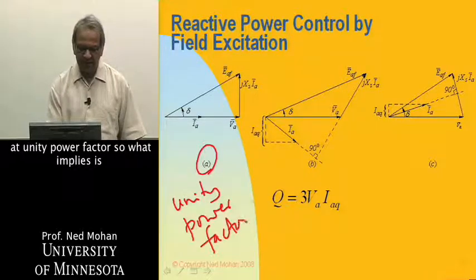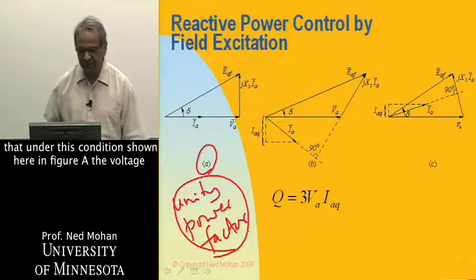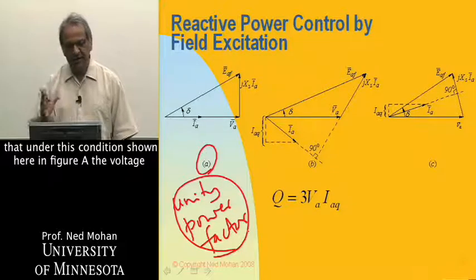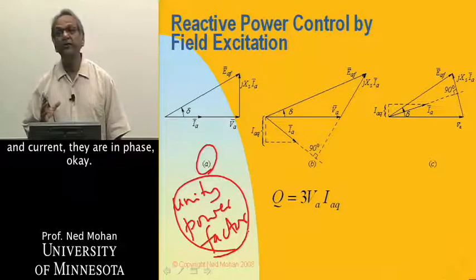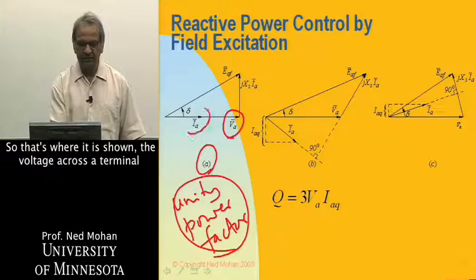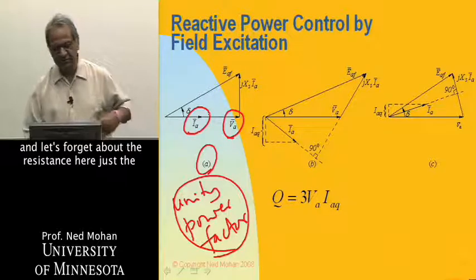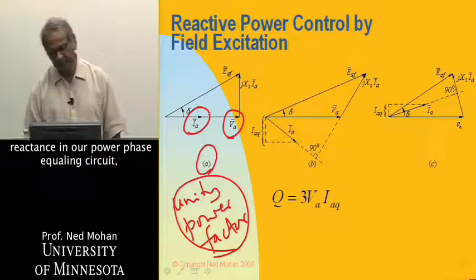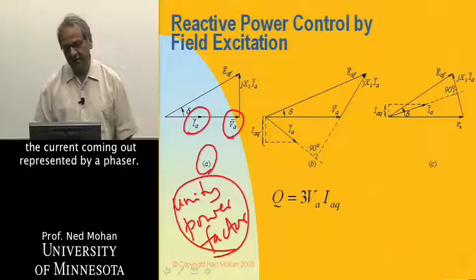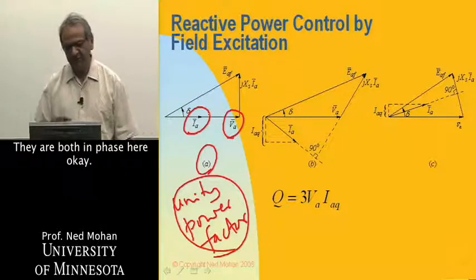Under this condition shown in figure A, the voltage and current are in phase. The voltage across the terminal and the current coming out, represented by a phasor, are both in phase — ignoring resistance and considering only the reactance in our per-phase equivalent circuit.